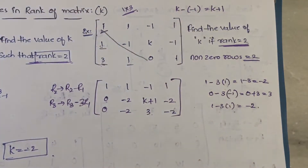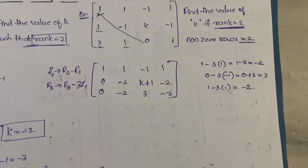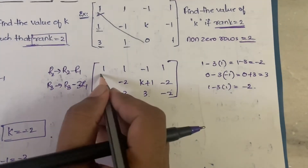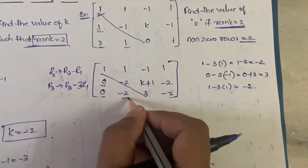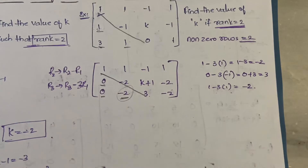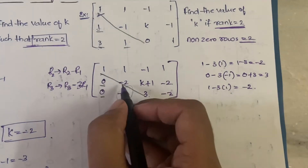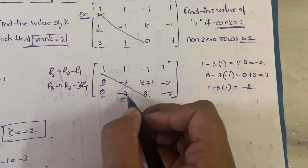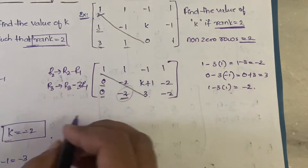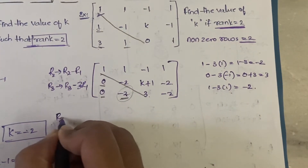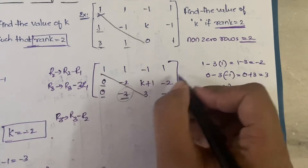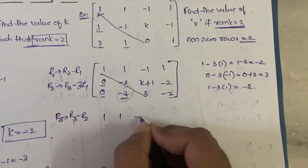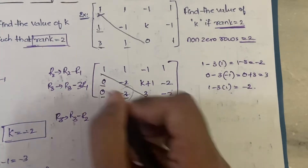Now, looking at the new diagonal, the elements below the diagonal are 0, 0, and minus 2. Our goal is to make minus 2 into zero. Since R2 also has minus 2, we can subtract them using R3 = R3 minus R2. The first and second rows stay as they are.